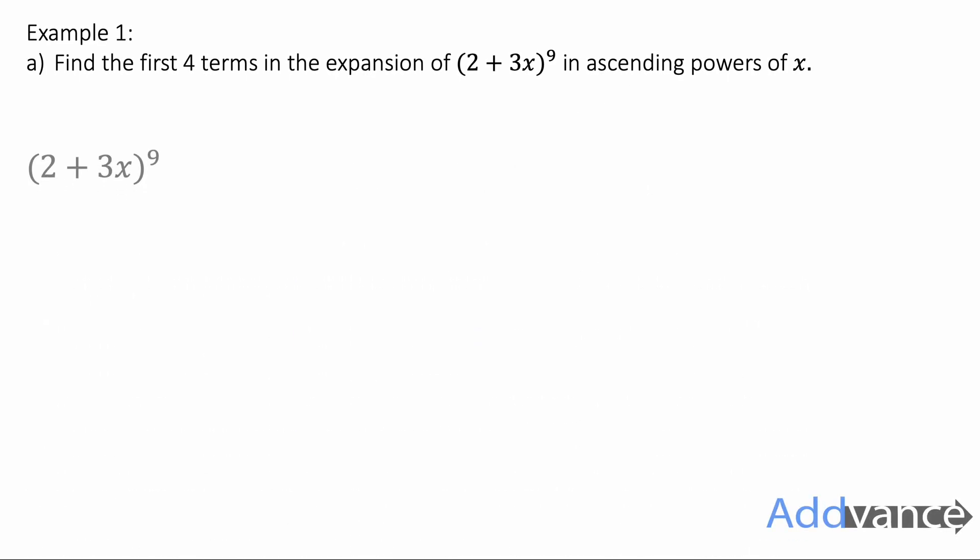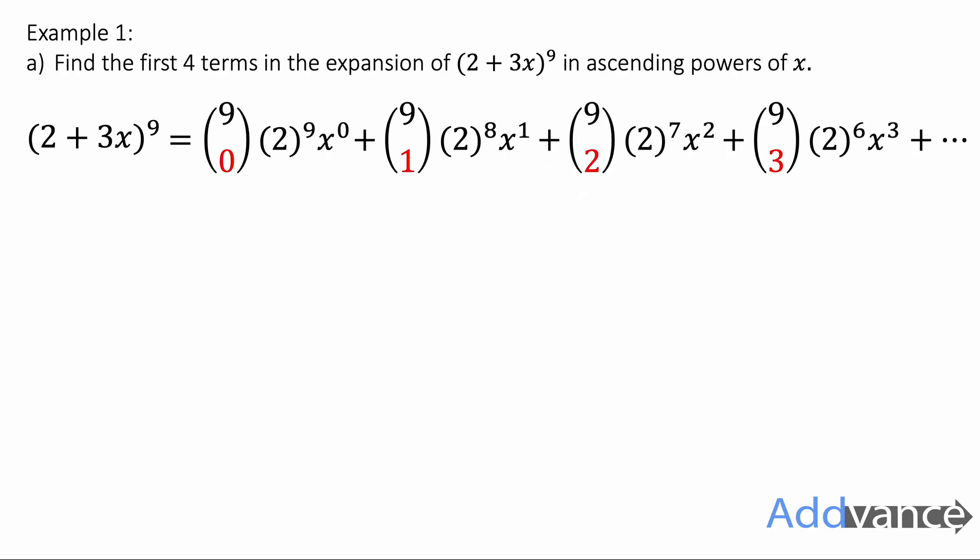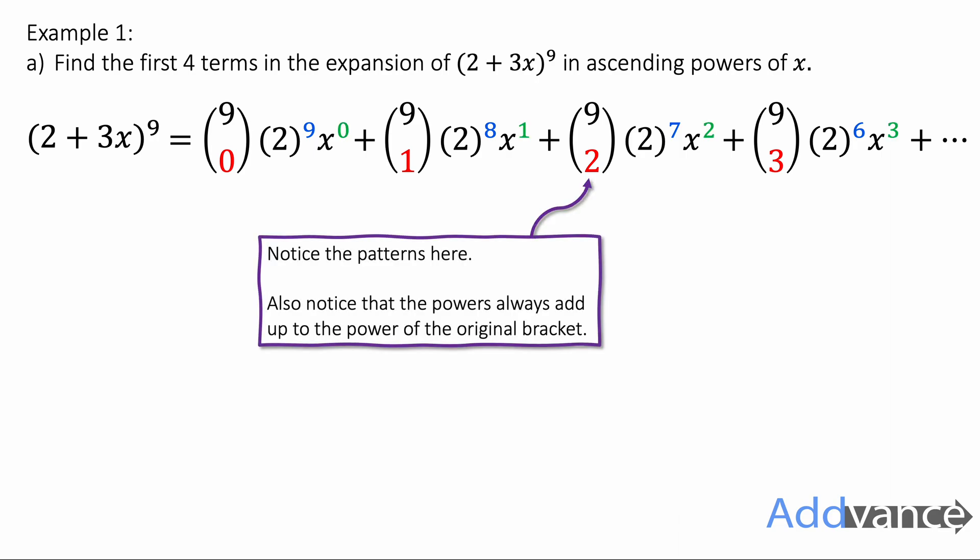Let's have a look at this. So 2 plus 3x to the power 9 will be given by 9 choose 0, 2 to the power 9, x to the power 0, 9 choose 1, 2 to the power 8, x to the power 1, etc. Where 9 choose 0, 9 choose 1 is going up 1, 2, 3, 4, 5. The powers of 2: 9, 8, 7, 6 are counting down from 9. And the powers of x are 0, 1, 2, 3, they're counting up from 0. And notice the patterns here. If you recognize the patterns, you'll be able to check your work and be more confident with binomial expansion.